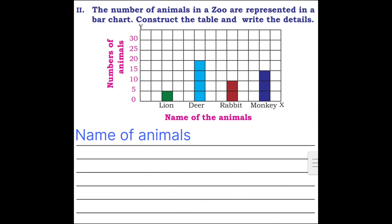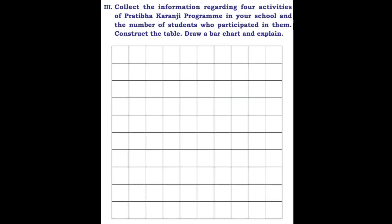That is the next question. Third question, collect the information regarding four activities of Pratibha Karanji program in your school and the number of students who participated in them. Construct the table and draw a bar chart and explain. This is the exercise 15.1.